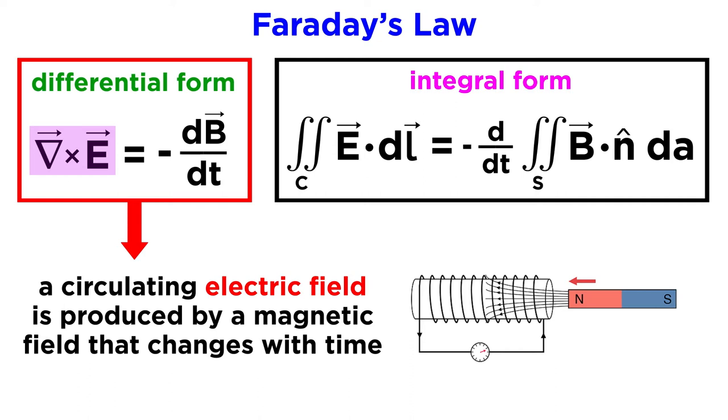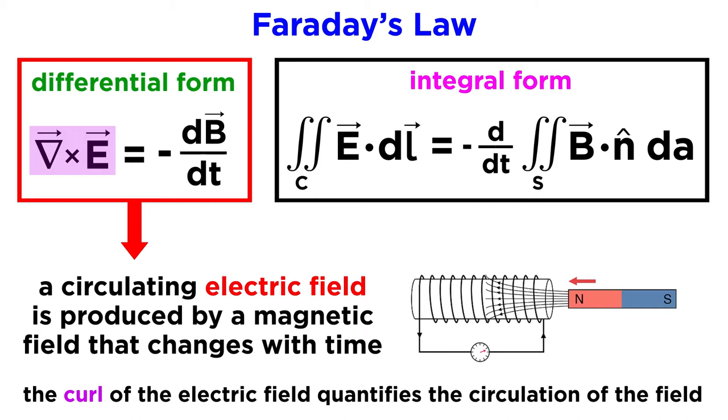The term on the left, which involves the cross product of the del operator and the electric field, is called the curl of the electric field, as we may recall from one of the mathematics tutorials. And this is used to quantify the circulation of that field.